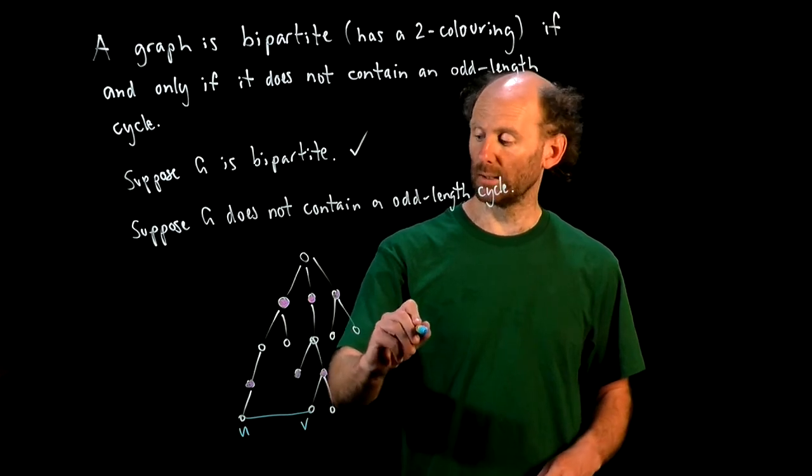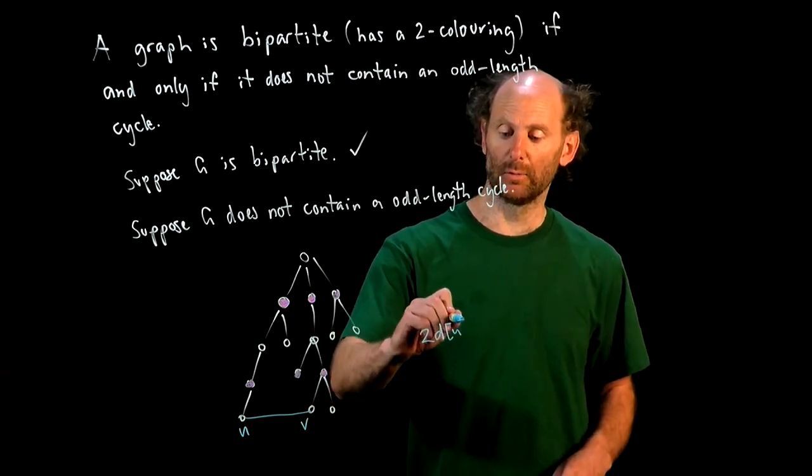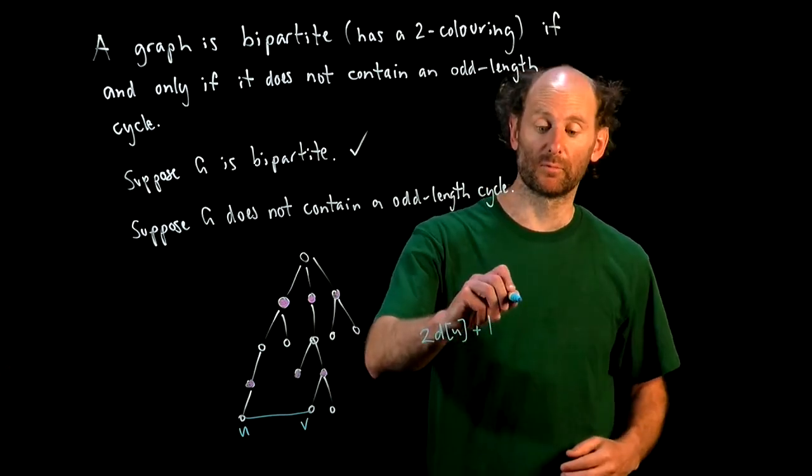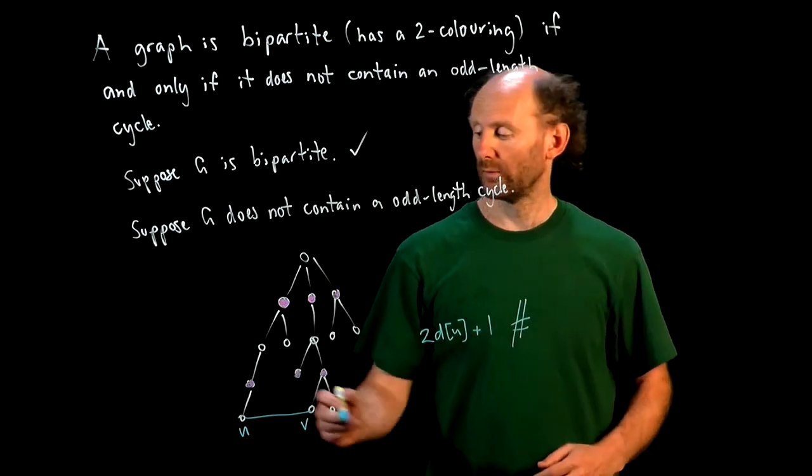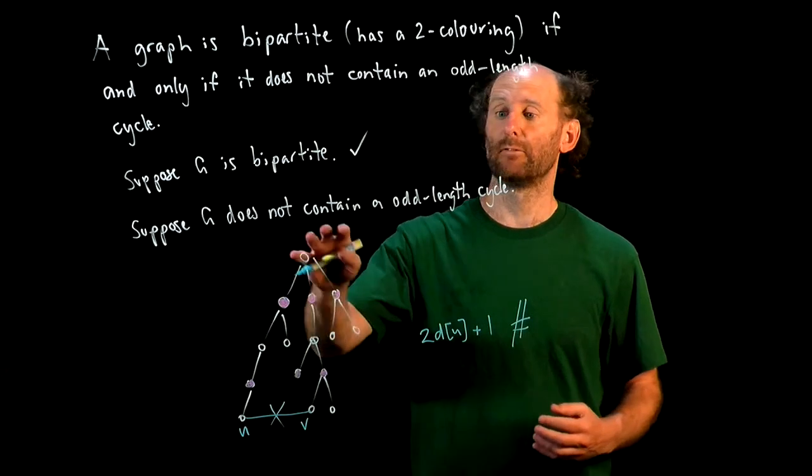So we'd get a cycle of length 2 times the depth of U, which is the same as the depth of V, plus 1, which is odd. So we've got a contradiction. So this thing can't exist, and our result is proved.